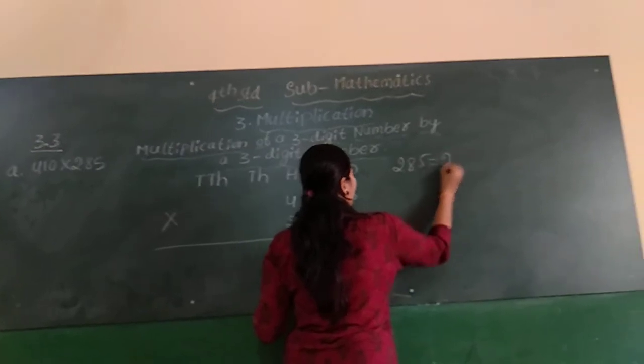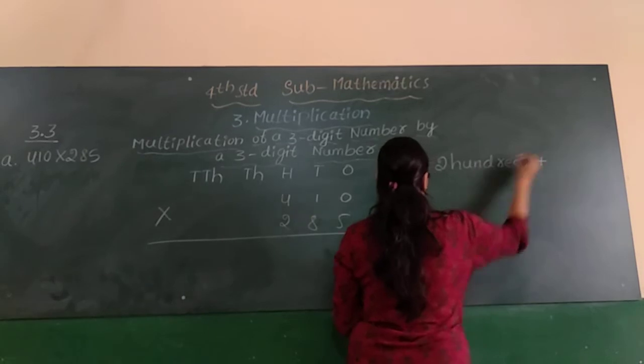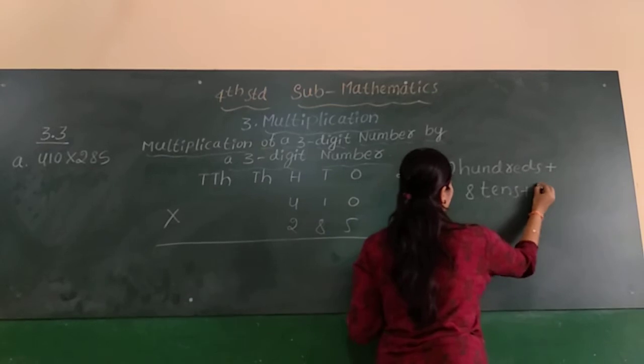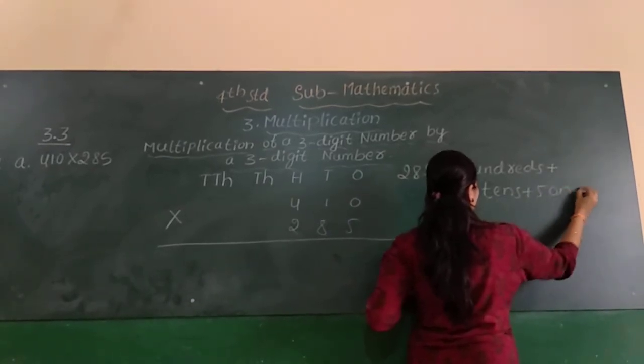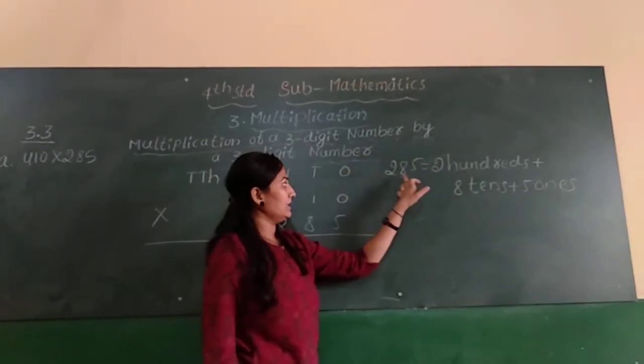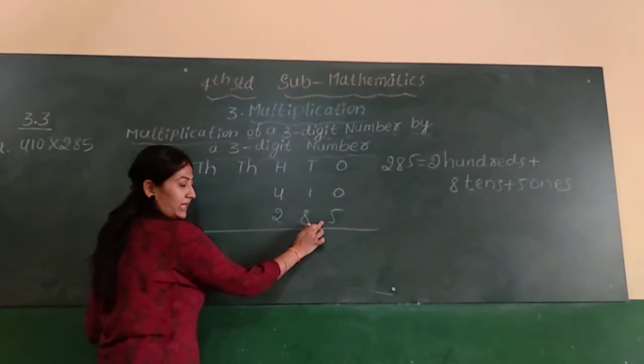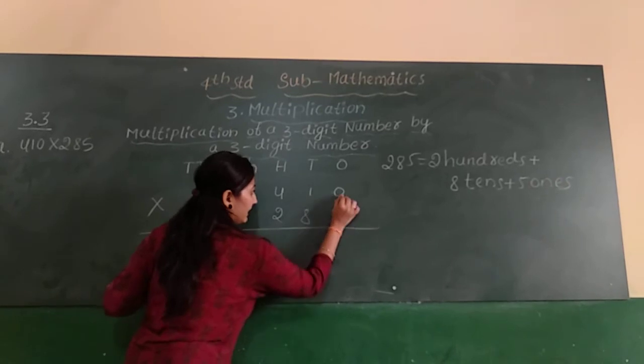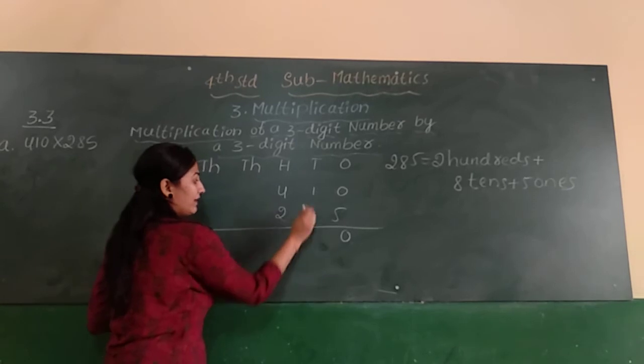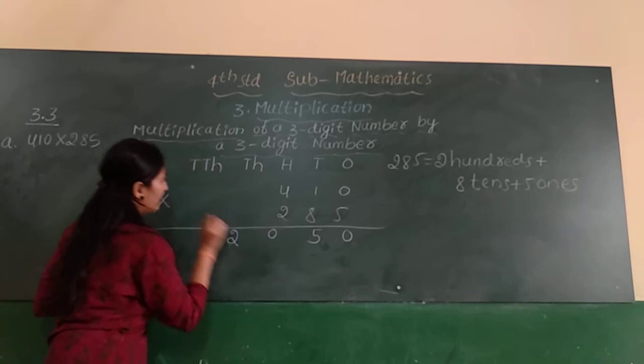285 can be written as 2 hundreds plus 8 tens plus 5 ones. First start from the 5. 5 into 0, anything multiplied by 0 is 0 itself. Next 5 ones are 5. Next 5 fours are 20.